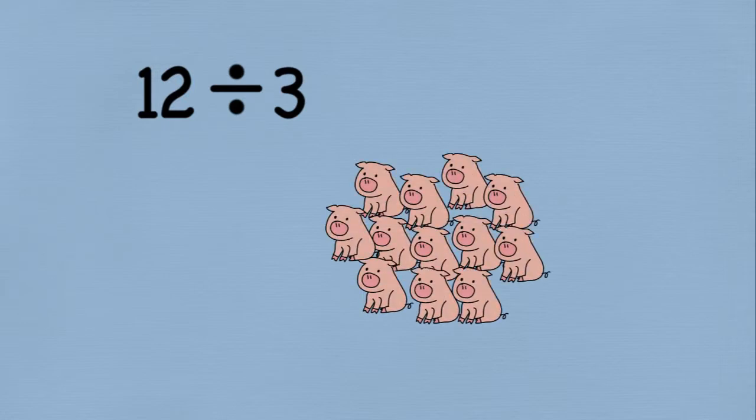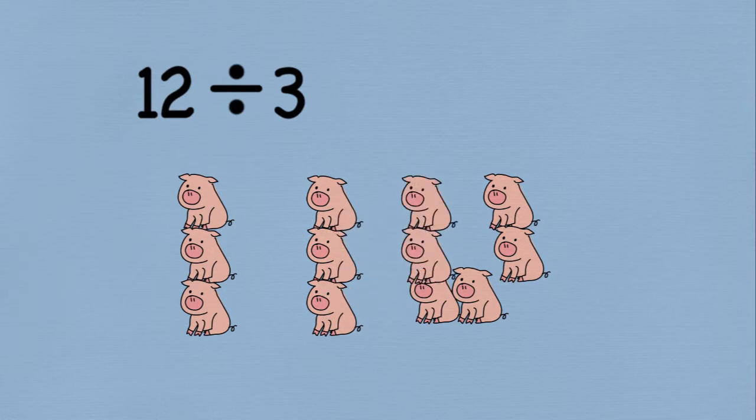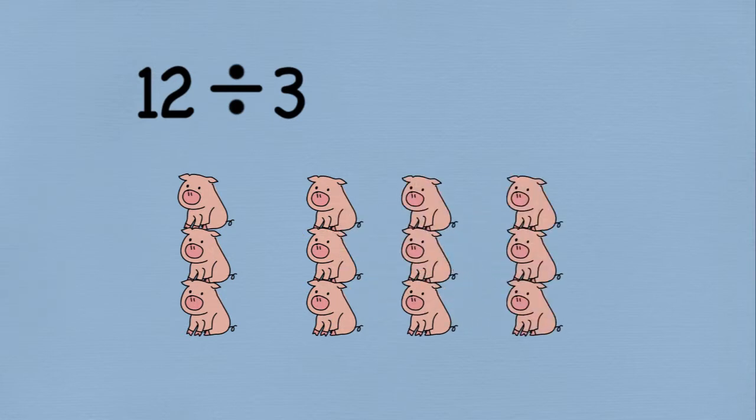Let's look at the problem 12 divided by 3. I can think of this as dividing 12 items, such as these pegs, into groups of 3 and seeing how many groups can form. I can see that I have 4 groups of 3. And we all know that 12 divided by 3 is 4, so there's no surprises here.